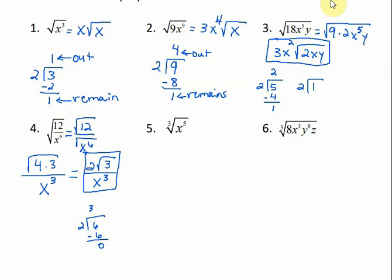For number 5, this time we're doing the cube root, so we're going to be dividing by 3. So 5 divided by 3 — 3 will go into 5 one time, and there's 2 left over. So 1x comes on the outside, and x squared stays under the radical.